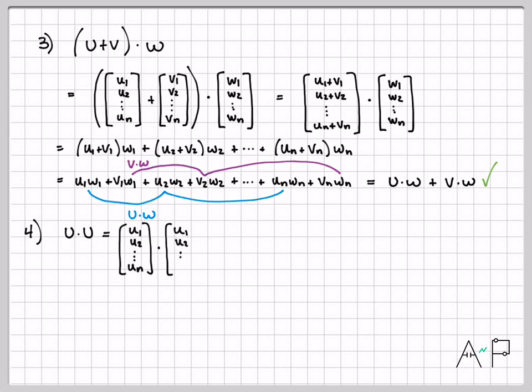One more property. u dot u. This is equal to u1 squared plus u2 squared plus all the way down to un squared. And obviously, this has to be greater than or equal to zero. I have a squared thing plus a squared thing plus a squared thing. These are vectors in R^n. So even if a single coordinate is negative, after I square it, it has to be positive. So u dot u is definitely greater than or equal to zero.